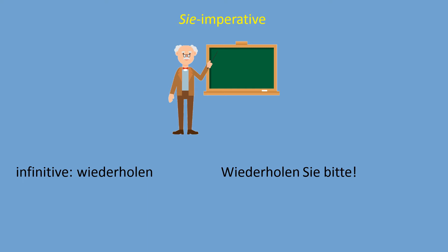The Sie-imperative is pretty easy to use — just use your verb, and if you have a separable prefix you separate it and place it at the end of the request. There is one verb to memorize with a specific form: the verb 'to be.' If you want to ask somebody formally 'please be,' you use the special form 'seien Sie.' For example: 'Seien Sie nett, bitte' — please be nice.